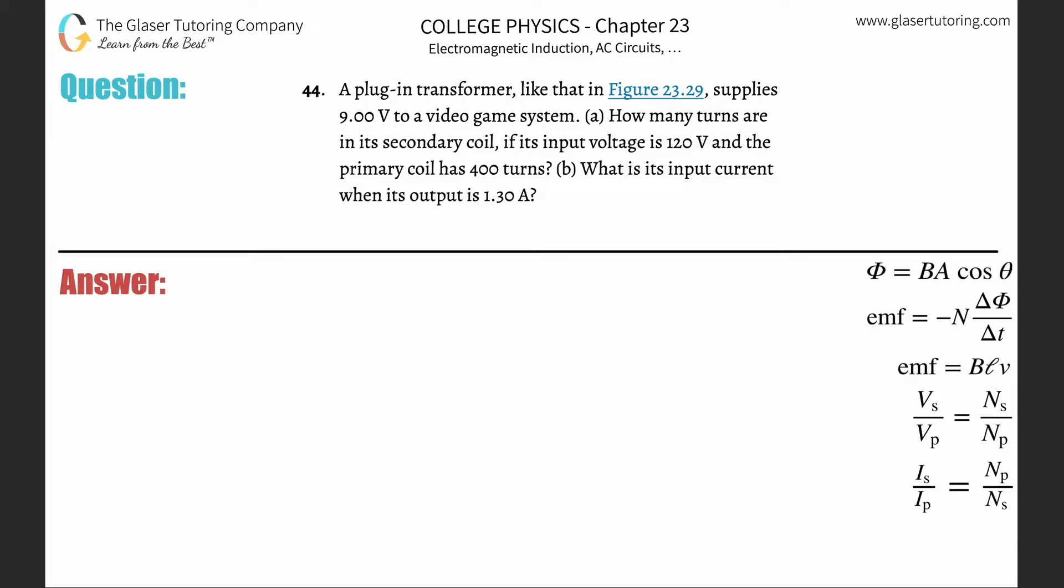Number 44, a plug-in transformer like that in figure 23.29 supplies 9 volts to a video game system. Letter A, how many turns are in its secondary coil if its input voltage is 120 volts and the primary coil has 400 turns?